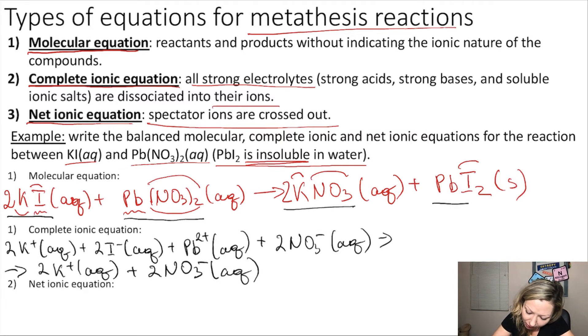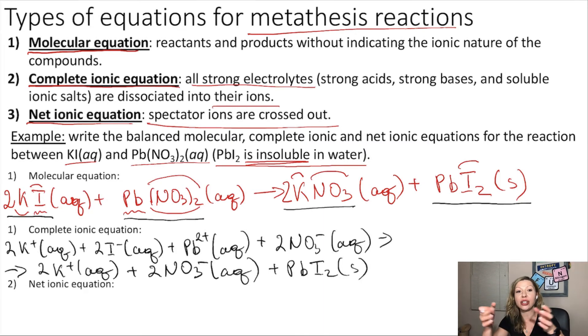So what happens with lead iodide? It is not a strong electrolyte. It is indeed insoluble in water, so we will have to show it as PbI2 solid. So this is simply the complete ionic equation. You took all the strong electrolytes and you showed them in their dissociated ionic forms.